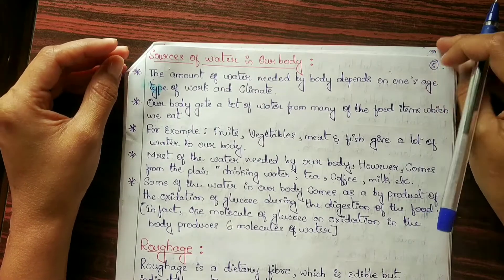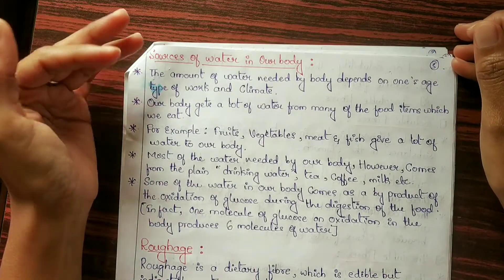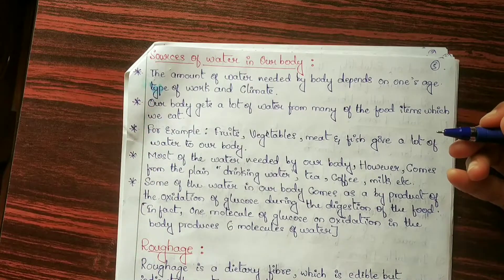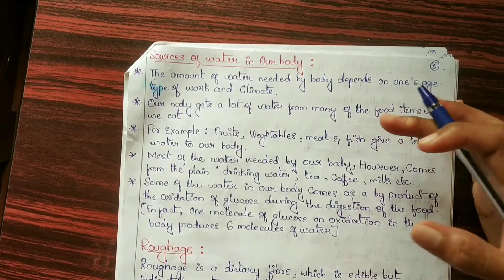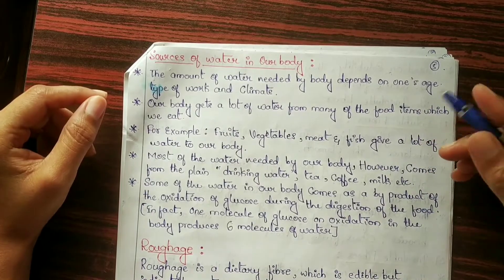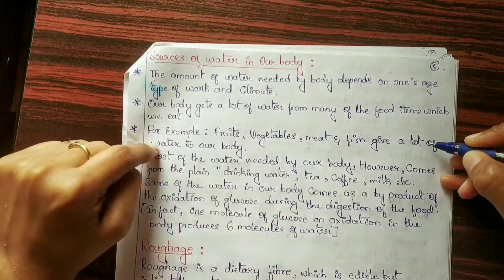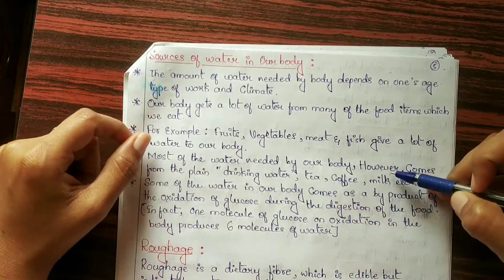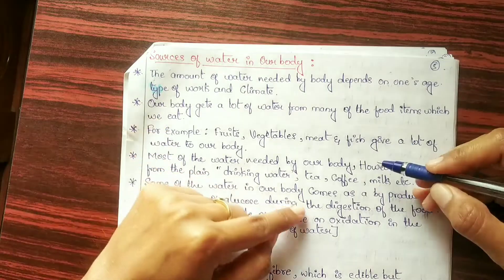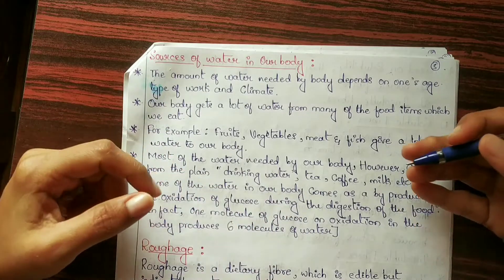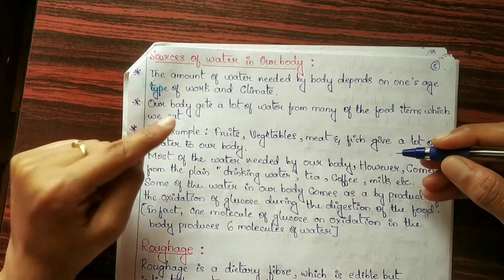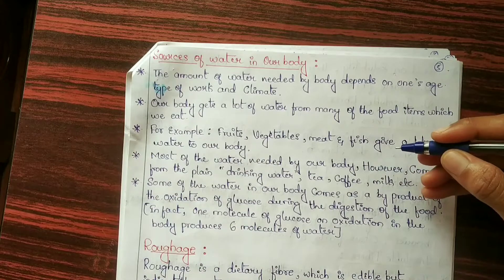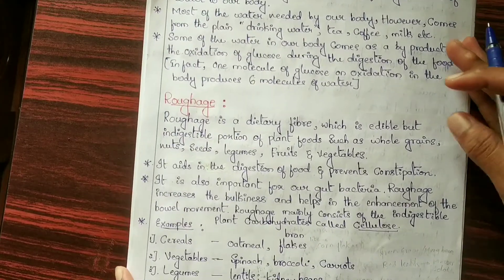The amount of water needed by the body depends upon age, type of work, and climate. Our body gets a lot of water from many food items — fruits, vegetables, meat, and fish give a lot of water to our body. Most of the water our body needs comes from plain drinking water and beverages like tea, coffee, and milk. Some water in our body also comes as a byproduct of oxidation of glucose during digestion — one molecule of glucose upon oxidation produces six molecules of water.